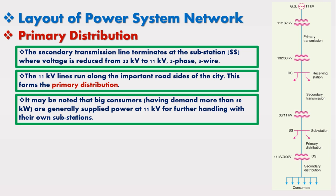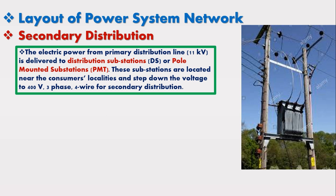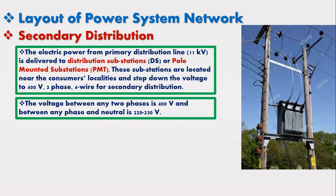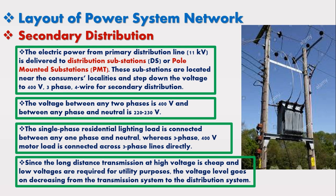The electric power from the primary distribution line at 11 kV is delivered to distribution substations or pole-mounted substations, commonly known as PMT, as shown in the figure. These substations are located near the consumer's localities and step down the voltage to 400-volt, three-phase, four-wire for secondary distribution. The voltage between any two phases is 400 volts, and between any phase and neutral is 220–230 volts. Single-phase residential lighting load is connected between any one phase and neutral, whereas three-phase 400-volt motor load is connected directly across the three-phase lines. Voltage levels decrease progressively from the transmission system to the distribution system.